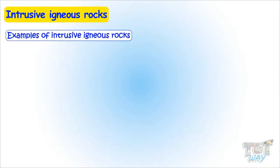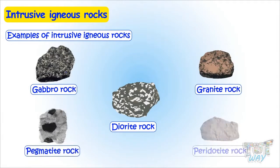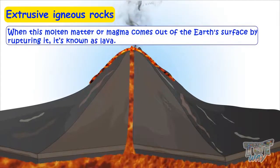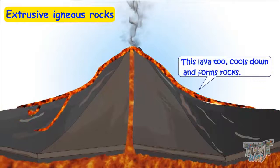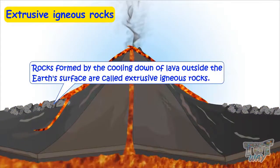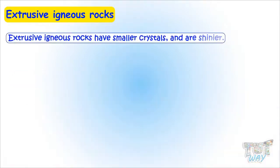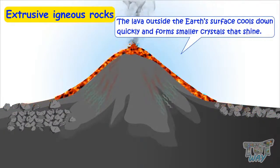Examples of intrusive igneous rocks are diorite, gabbro, granite, pegmatite, and peridotite. When molten matter or magma comes out of the earth's surface by rupturing it, it's known as lava. This lava cools down and forms rocks, and rocks formed by the cooling of lava outside the earth's surface are called extrusive igneous rocks. Extrusive igneous rocks have smaller crystals and are shinier, because the lava outside the earth's surface cools down quickly and forms smaller crystals that shine.